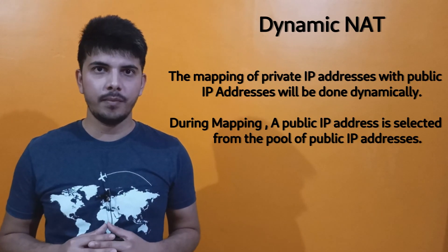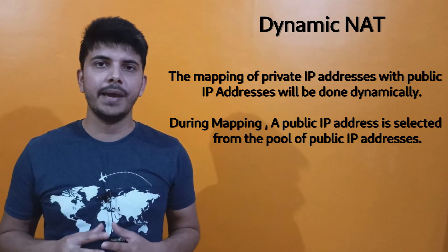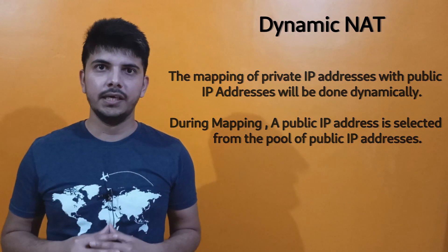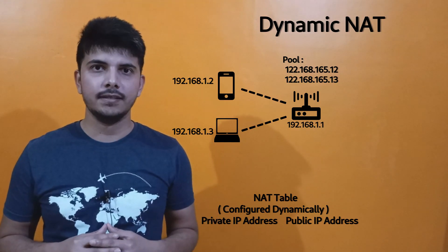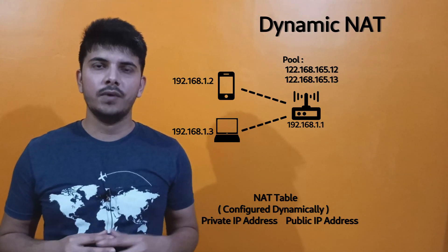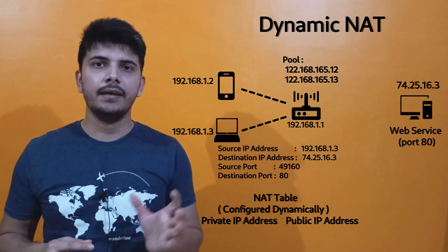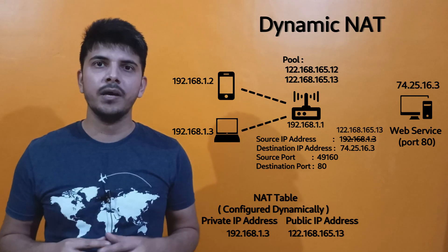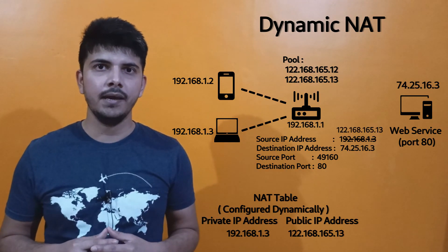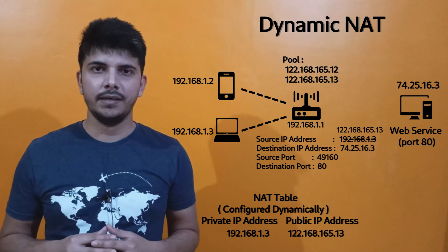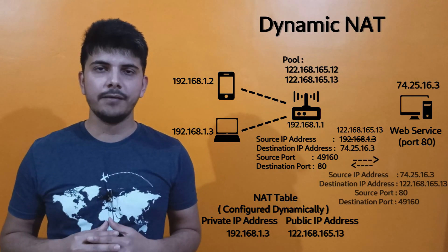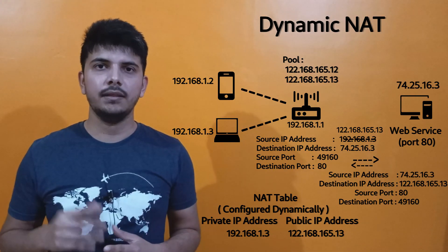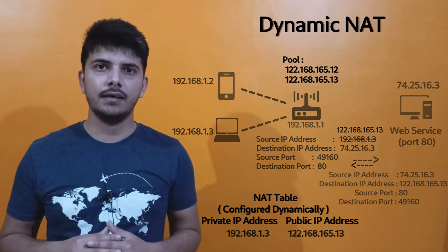After that we have dynamic NAT, in which the router will have a pool of public IP addresses, and these public IP addresses will be mapped with the private IP addresses dynamically. For example, consider the router has two public IP addresses and there are two devices connected to the router. When a system tries to communicate with the remote system, dynamically the router will assign or map one of the public IPs to that particular private IP address, change the source IP address, and send the data to the destination system. Once the data comes back, it will use the NAT table to identify where to revert the data.